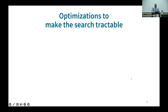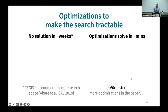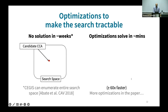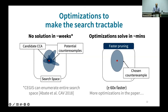Unfortunately, all this is not enough. Out of the box, the CGIS loop is slow and fails to find solutions in weeks. We developed several optimizations to solve our queries in minutes. Consider the search space of CCAs: the generator picks a point in each iteration, and there may be many counterexamples that break the CCA. Since different counterexamples encode different amounts of information, they prune different amounts of our search space. We identify what properties of counterexamples govern the size of the search space pruned and pick larger counterexamples, speeding up our search.